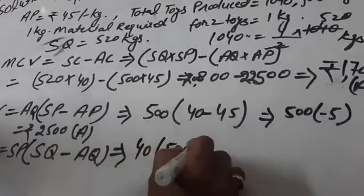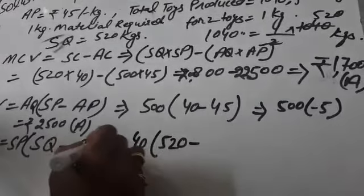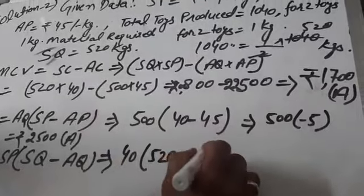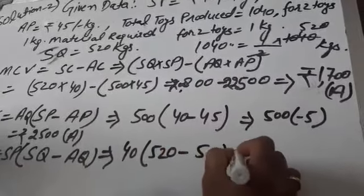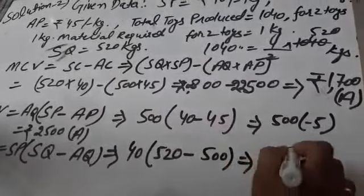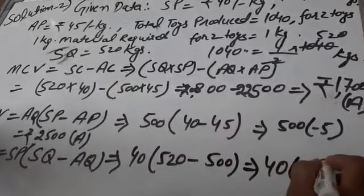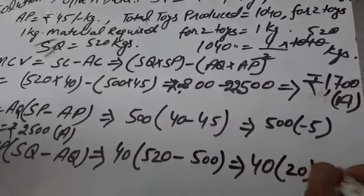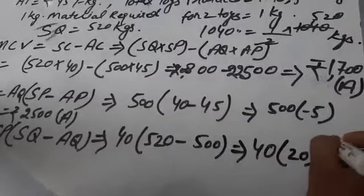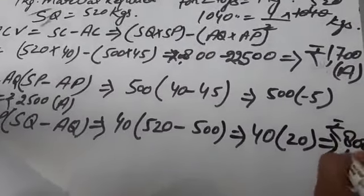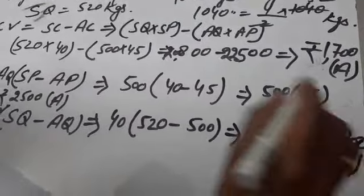Actual quantity 500, multiply 20. This answer comes in positive form, Rs. 800 in favorable terms because it comes in positive form.